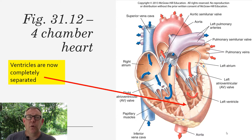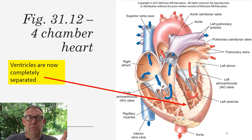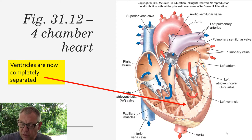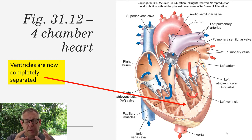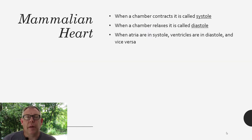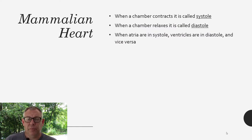In a four-chambered heart, separate chambers have evolved for deoxygenated blood and oxygenated blood, so there's no mixing at all. The ventricles are completely separated instead of having a spiral valve. Now it's impossible for the blood to mix.